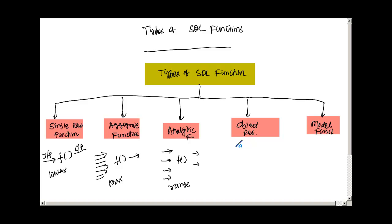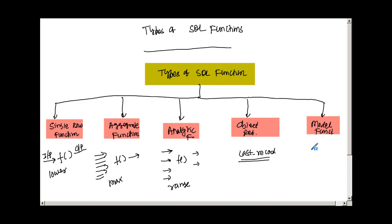In the case of object reference functions, if you use object-oriented DBMS, you can manipulate object data types using these functions. An example is LAST_VALUE — you get an array and can navigate the data structure. Model functions are similar to analytic functions and provide higher capability for data warehousing or mining. They are not really in scope for this introductory SQL functions chapter, but you can refer to the Oracle SQL Reference Guide if interested.